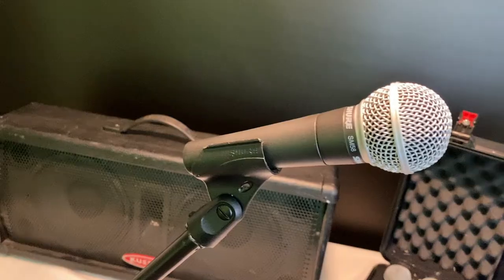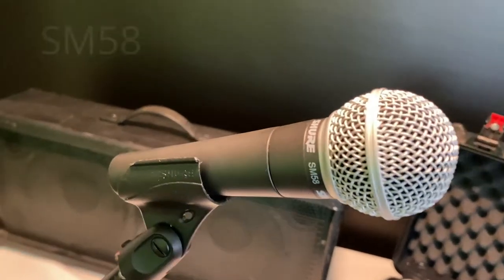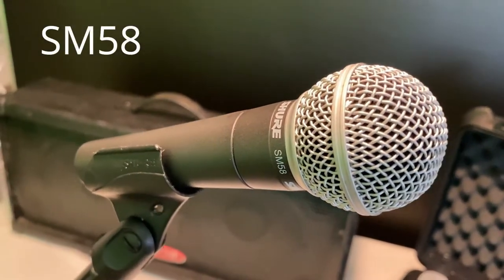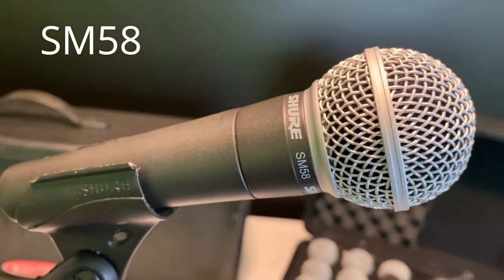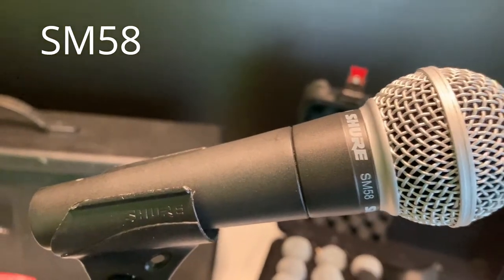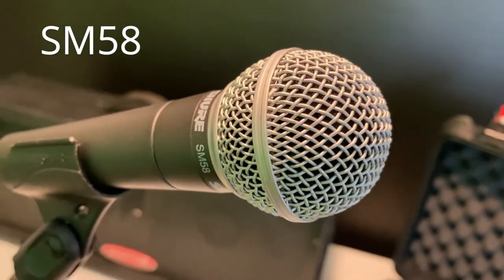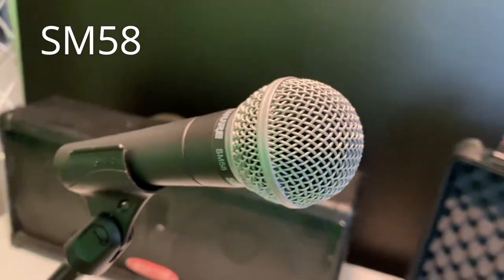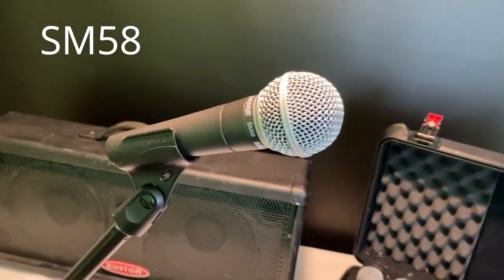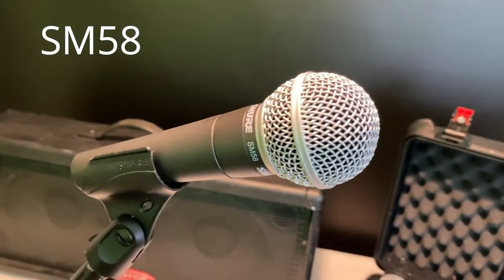The SM58 is a unidirectional cardioid dynamic vocal microphone for professional vocal use and sound reinforcement and in studio recording, although it's used more in the live setting, with a highly effective built-in spherical filter that minimizes wind and breath pop noises.